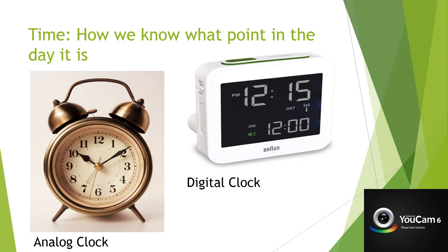Our next unit of measurement is time, and this is something our children are very familiar with — we hear every day, 'Can we have more time outside?' or 'Is it lunchtime yet?' The basic tools for measuring time are clocks, calendars, and planners. I've included both an analog clock and a digital clock. The children don't yet know how to read an analog clock, but we familiarize them with it and use it to help them identify numbers by sight.